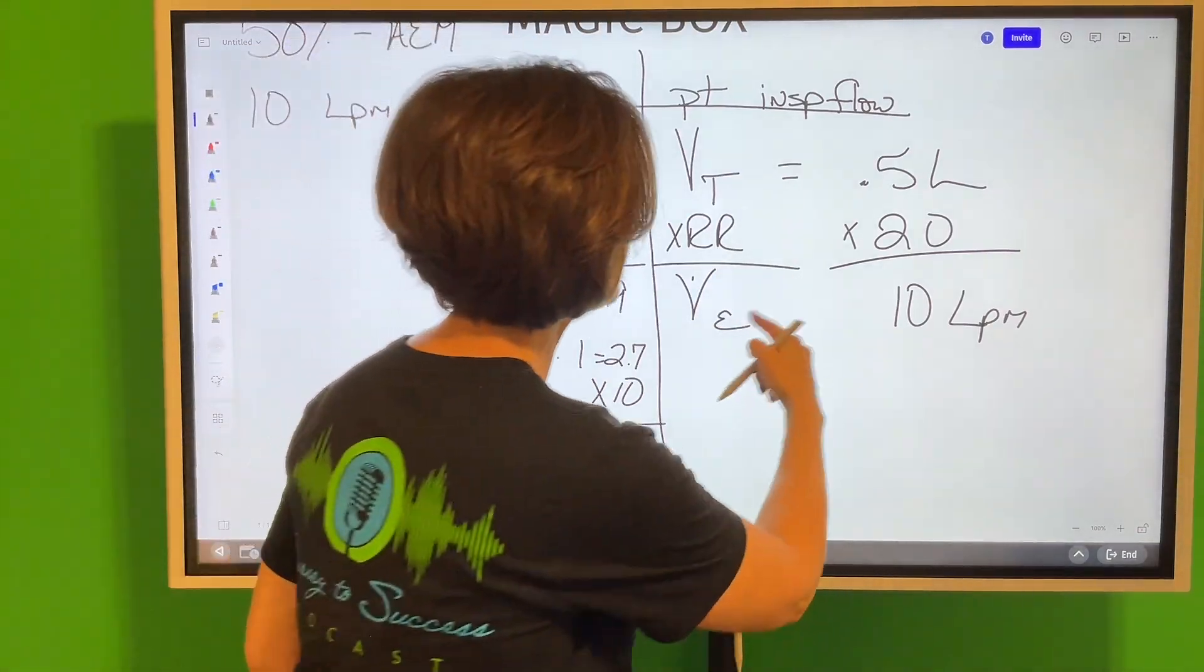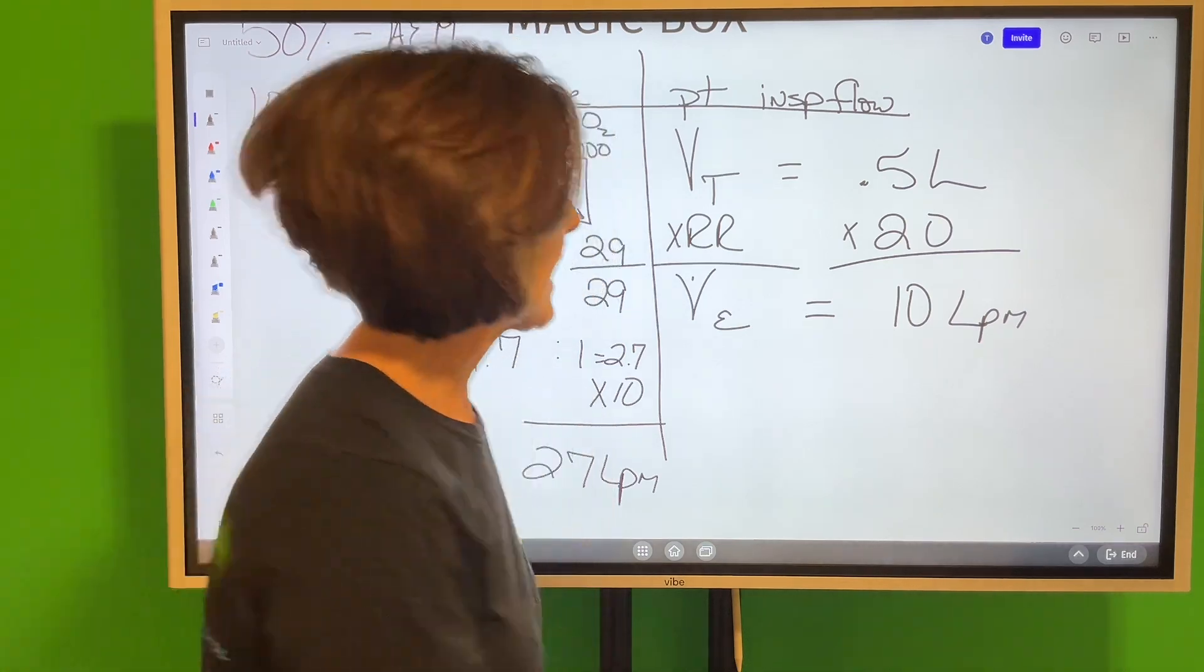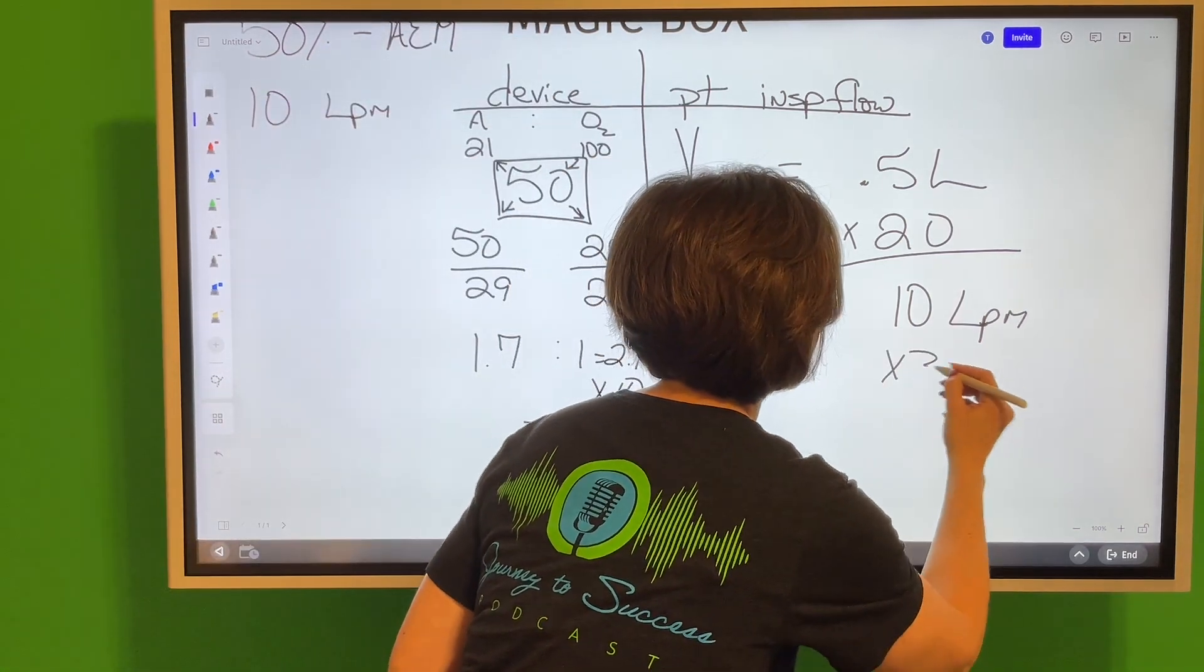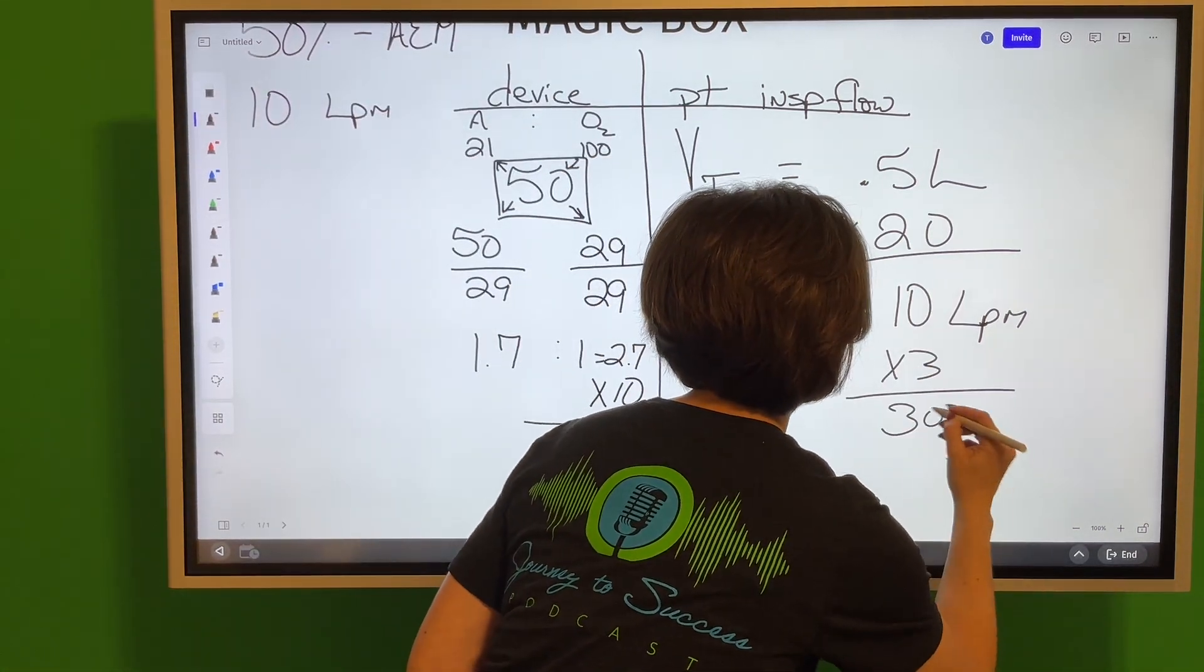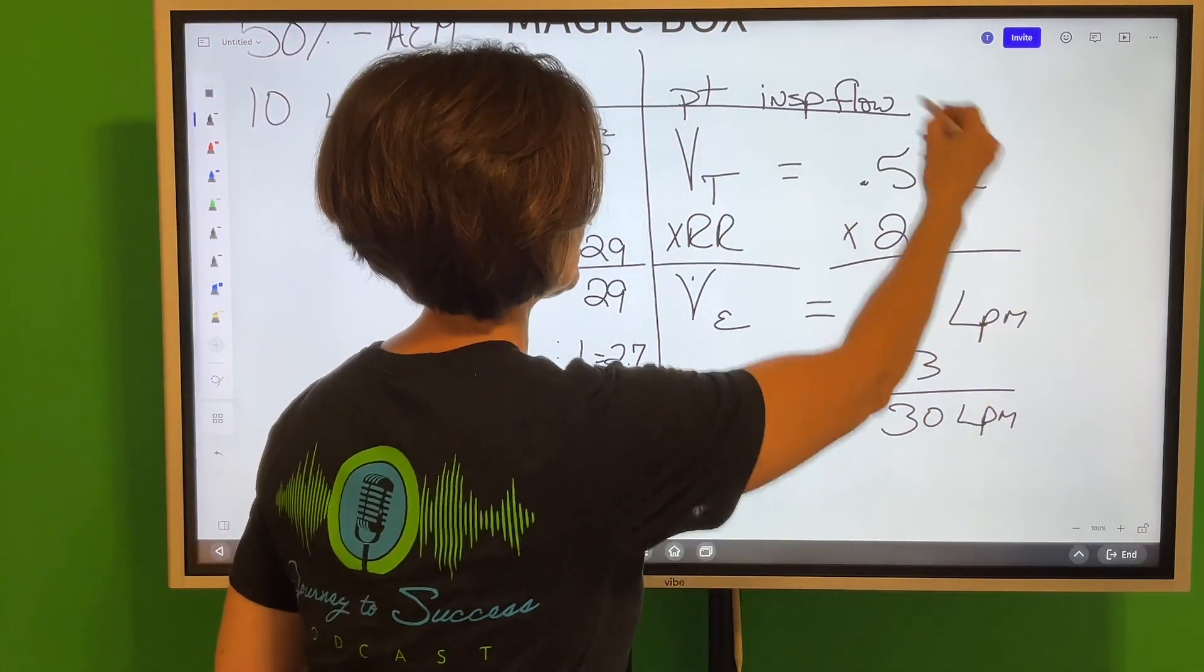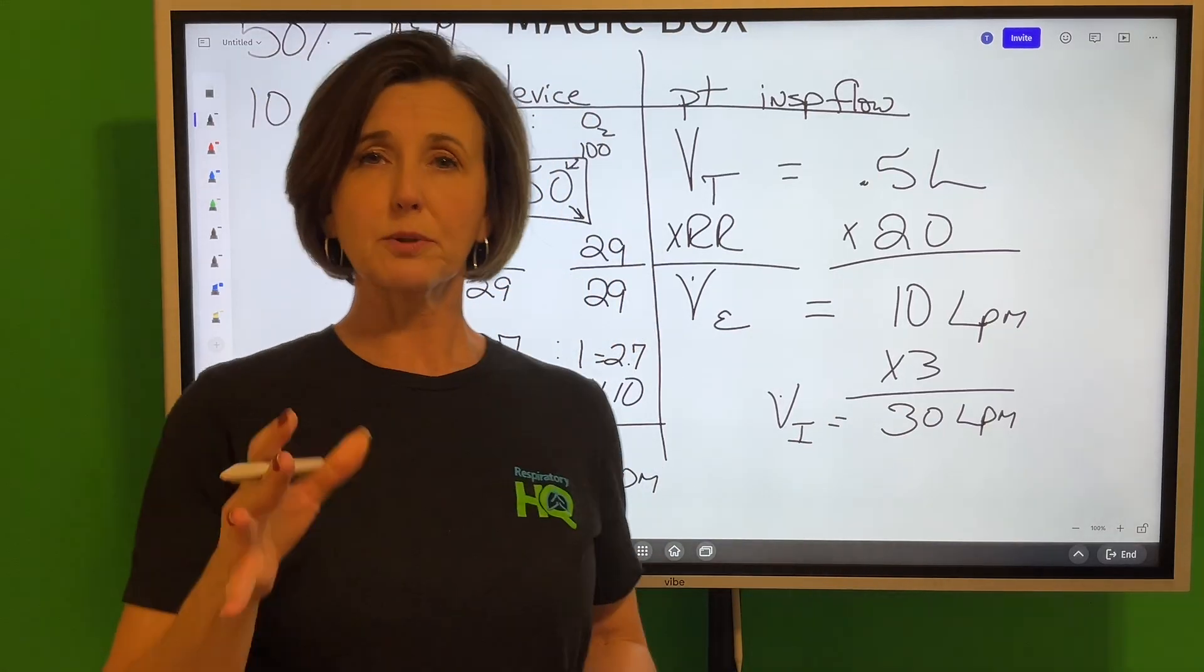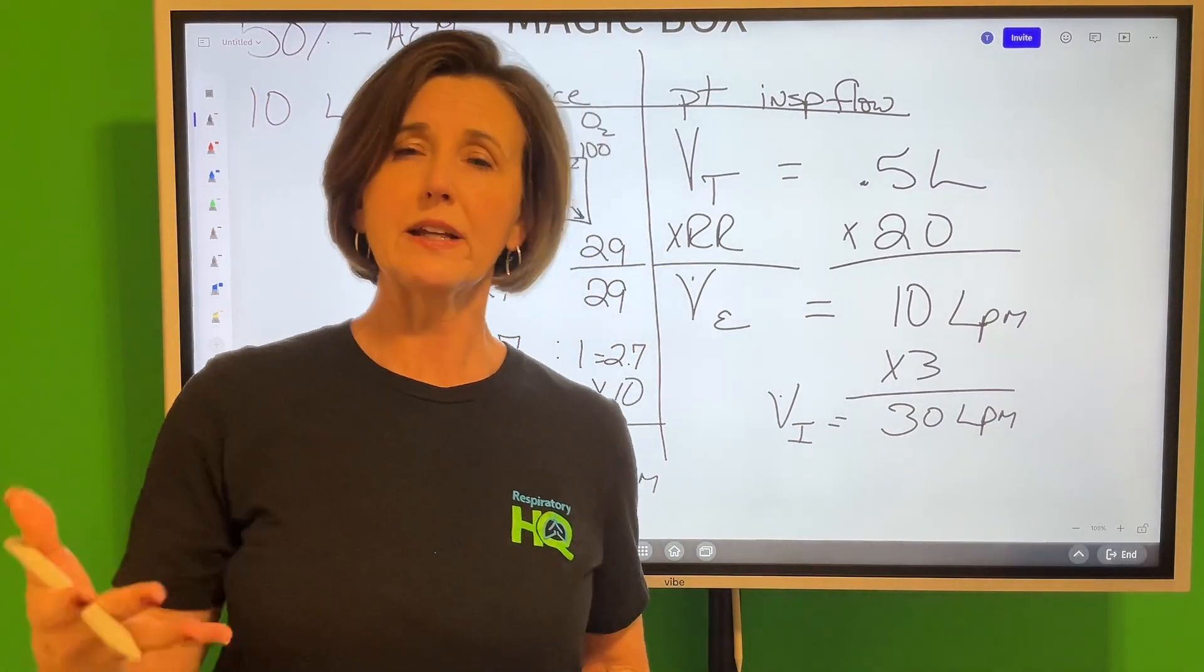When you take the minute volume and you multiply it by three, that is a very good estimation of the patient's inspiratory flow. So this patient's inspiratory flow is roughly about 30 liters per minute.